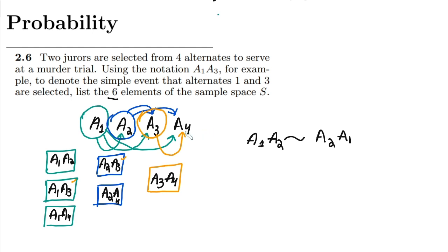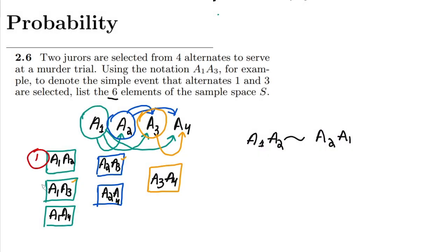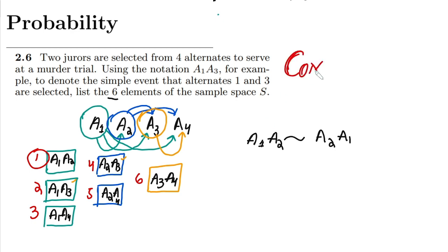The last juror, a4, stays alone because it is the only one left and all its pairings are already listed. Counting all elements: that's one, two, three, four, five, and six. This is the concept of combination.